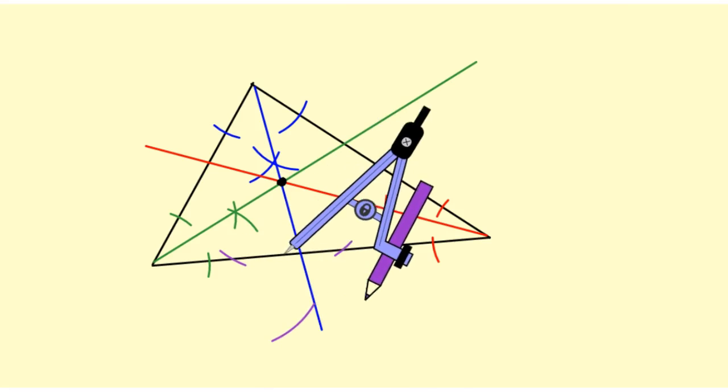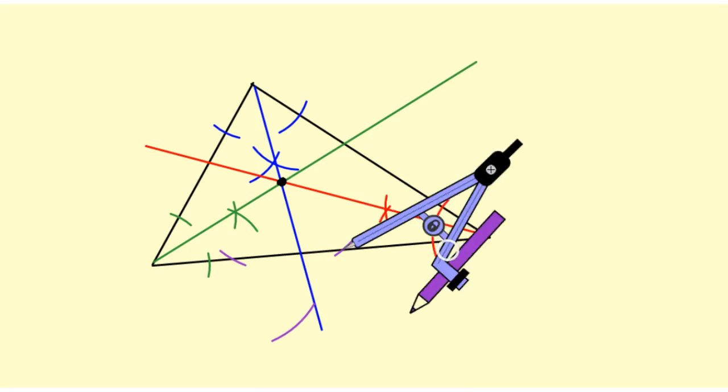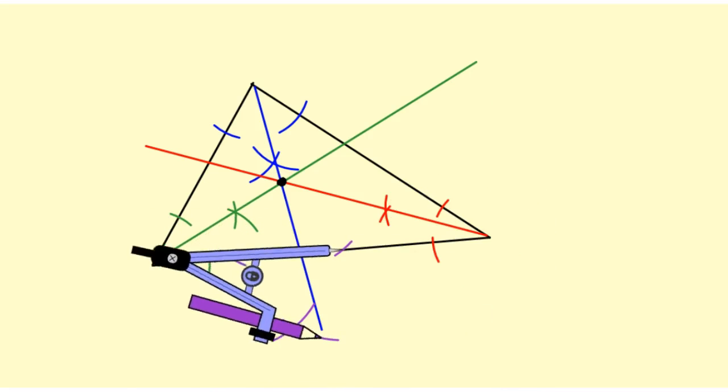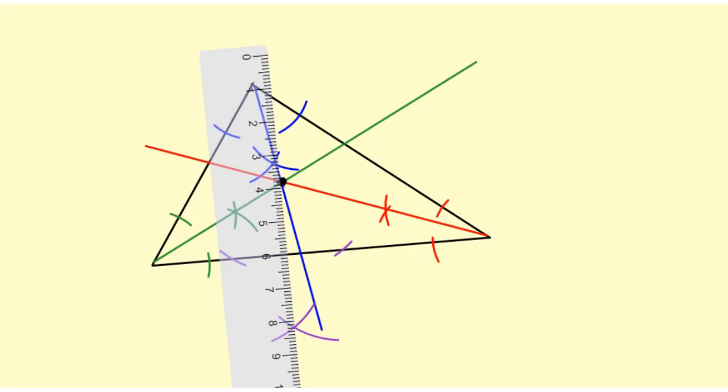And that intersection of those two arcs along with the point will give me a perpendicular segment. So I'm going to draw the perpendicular segment, but I'm just going to make this dotted below here.